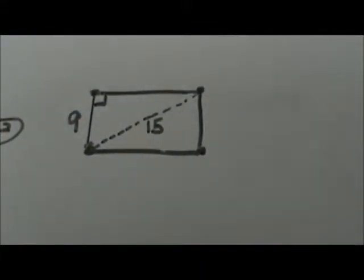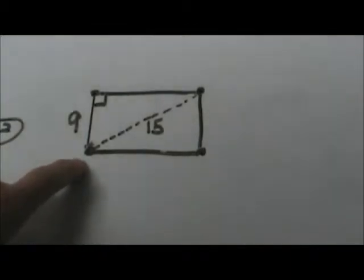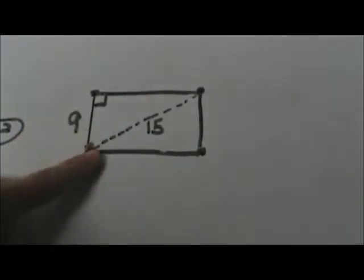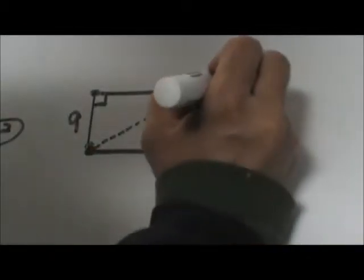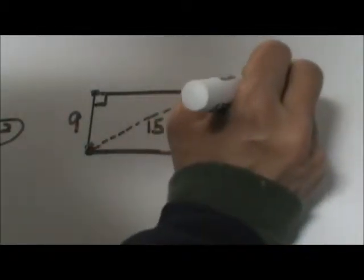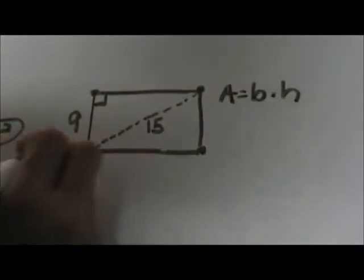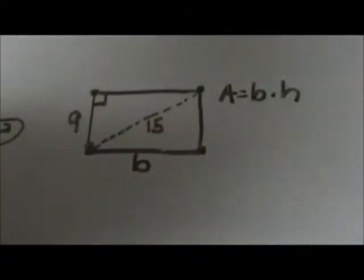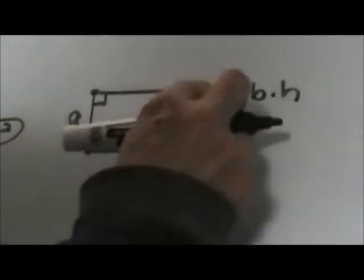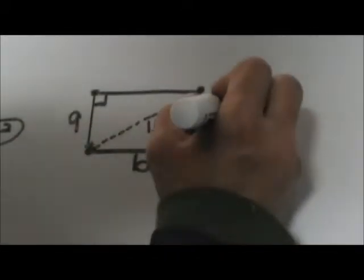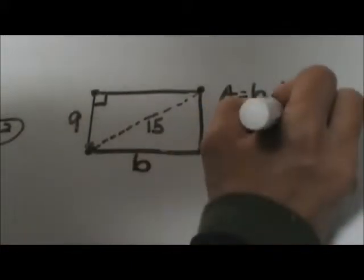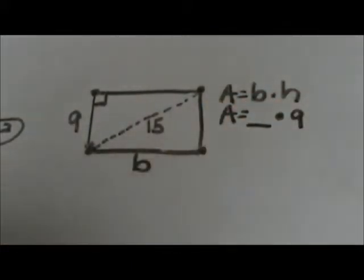There's our first example of a forward and a backward problem. Now let's look at an example of a rectangle where you're given the diagonal and one side, and you need to find the area. Remember the area formula is base times height. We know the height but we don't know the base, so we need to solve for the base given that we have the diagonal. We don't know the base so let's leave that blank and plug in 9 for the height.